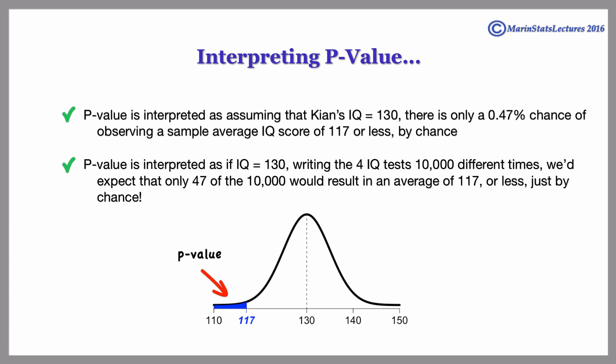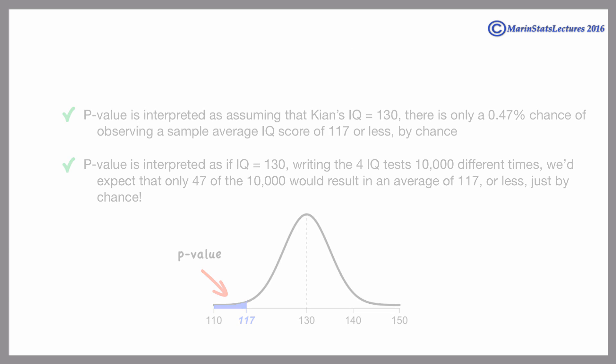It is interpreted as follows: assuming that Kian's IQ really is 130, there is only a 0.47% chance of observing a sample average IQ of 117 or less by chance.